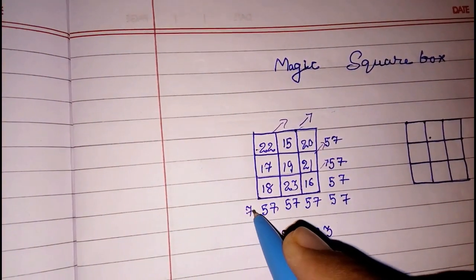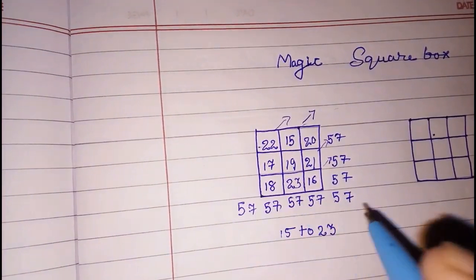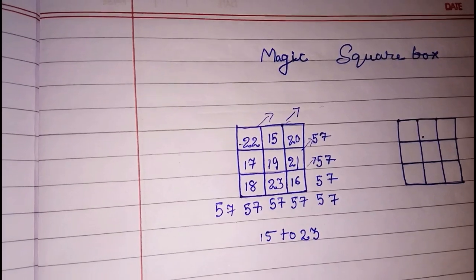This way also you will get 57, 9 and 8, 17 carry 1, 3, 4, 5. Look here, every time we are getting the same number.